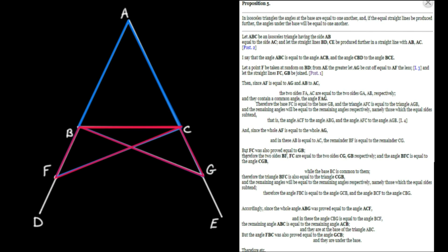FC was proved equal to GB — we inferred that from the congruence of the blue triangles. Therefore the two sides BF and FC are equal to the two sides CG and GB respectively. BF equals CG from the subtraction argument, and FC equals GB from the blue triangle equality.